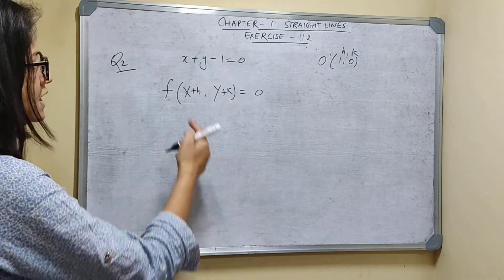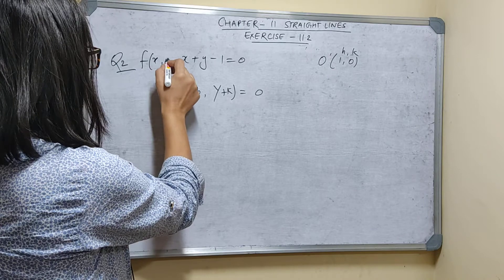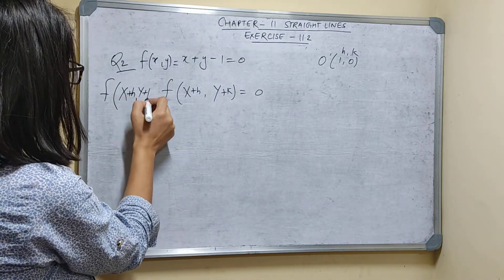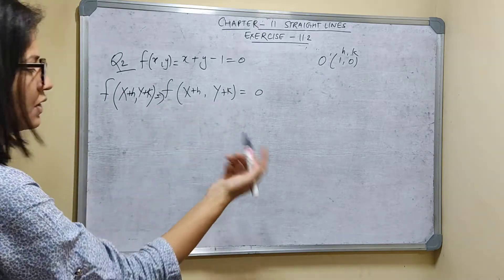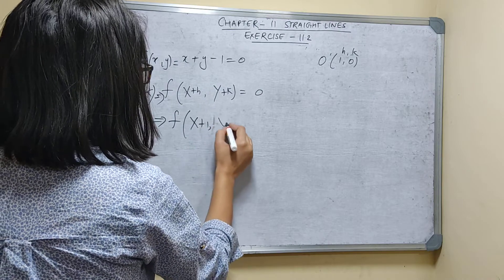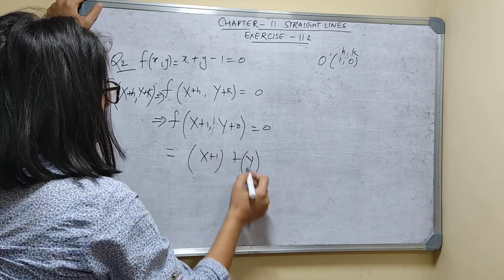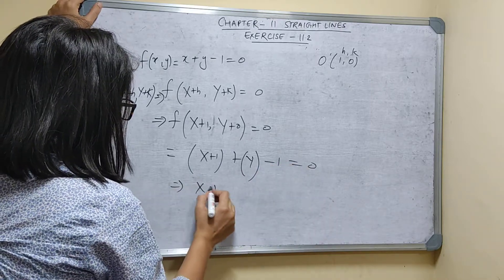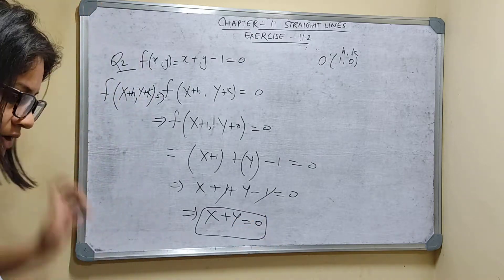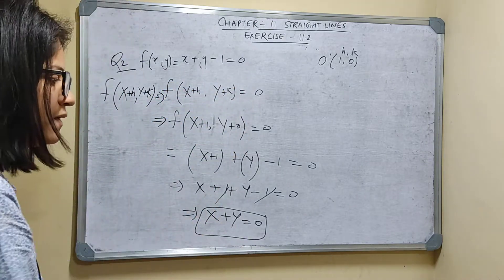At the place of X I will write capital X plus small h, and at the place of Y I will write capital Y plus K. So substituting: X + 1 + Y + 0 - 1 = 0, which gives X + 1 + Y - 1 = 0. The +1 and -1 cancel, so the new equation is capital X + capital Y = 0.